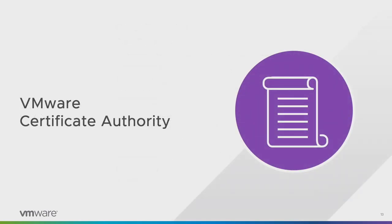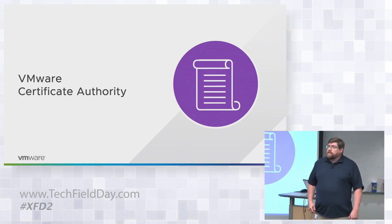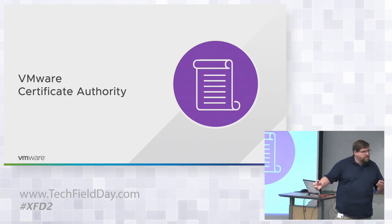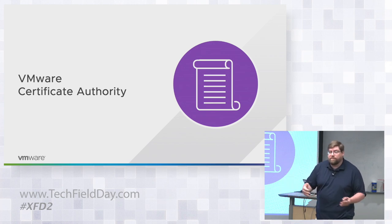VMware Certificate Authority — on the trying-to-make-it-easy-to-do-the-right-thing front. We use TLS — I'm going to use SSL and TLS interchangeably because I've been around for a while. The VMCA — managing all those certificates is a pain. We invented what I call 'just enough CA.' We can discuss whether it's enough CA or not enough CA over a beer.